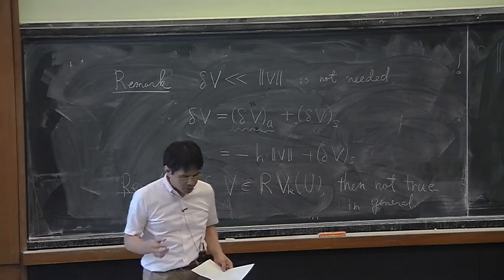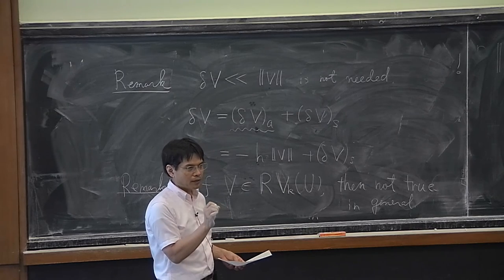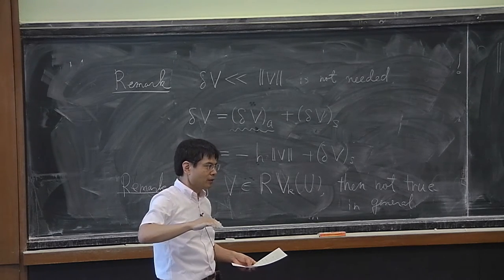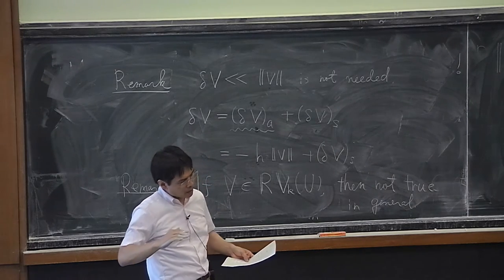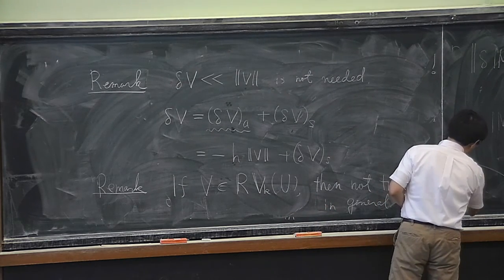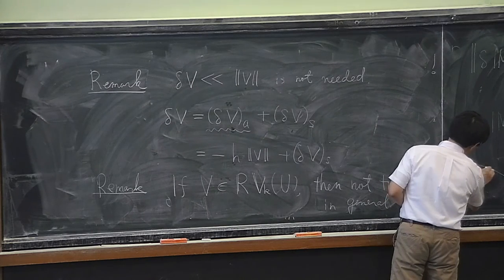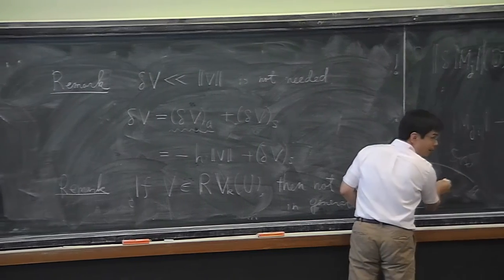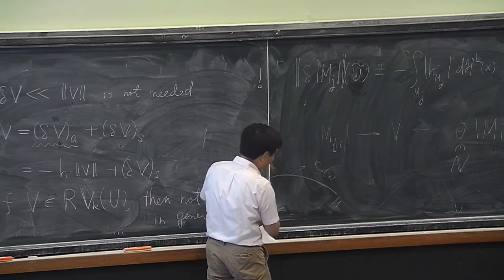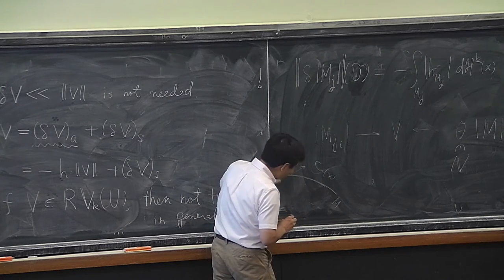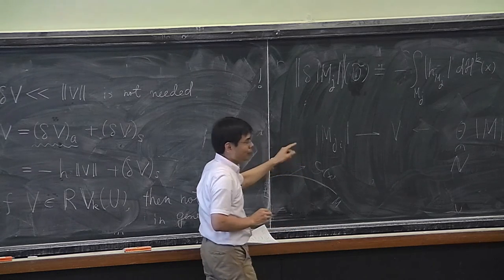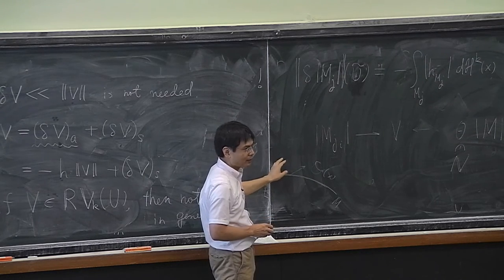The reason integer-valuedness matters: if theta is continuously varying along M (not integer-valued), then the first variation may pick up a tangential component due to the varying weight, so H need not be perpendicular to the tangent space. The multiplicity theta can be thought of as the number of sheets at a point — if theta = 2, you have two sheets of surface overlapping. An integer-valued theta corresponds to a well-defined number of sheets, which is essential for the perpendicularity result.